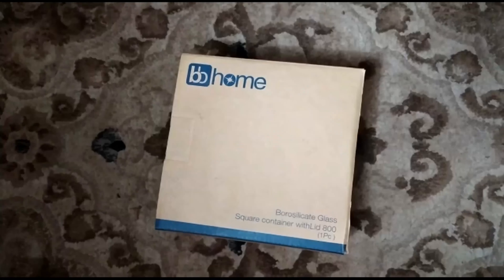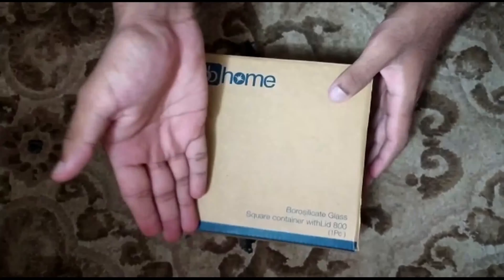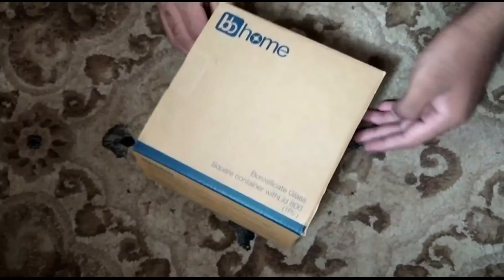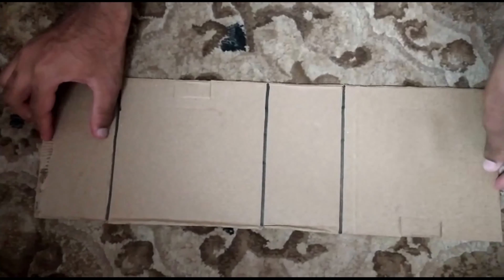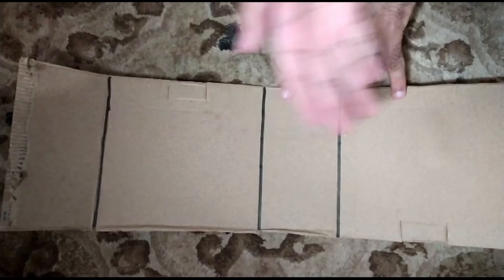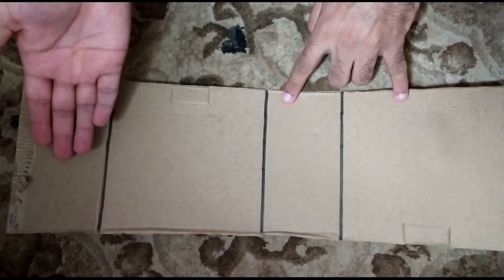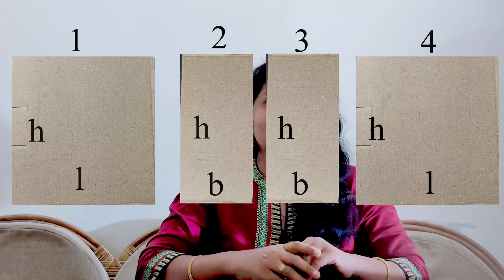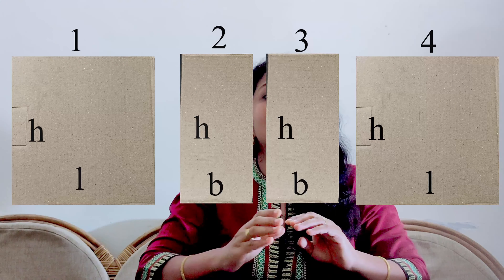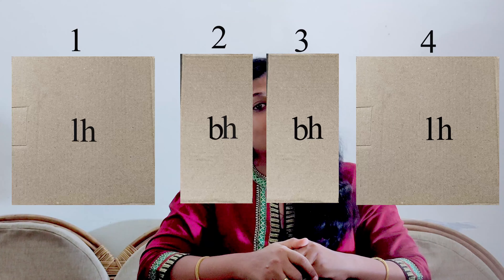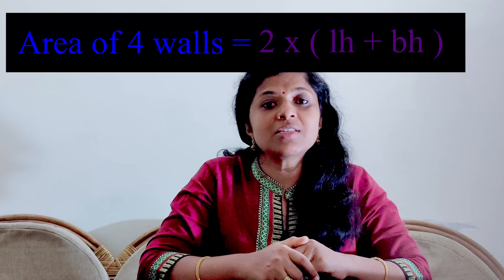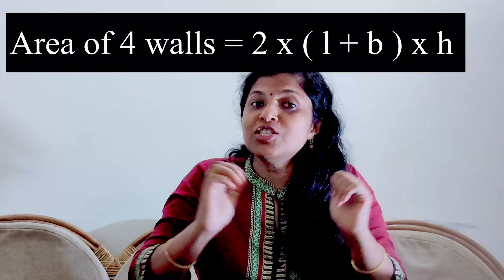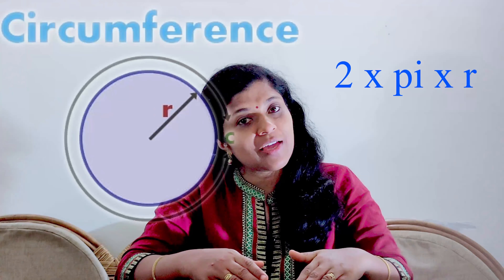Let us try to visualize what the area of four walls means. This is our room — we have a length, breadth, and a height. We open this room and separate each of its four walls. The opened-up room will look like wall one, two, three, four. To find the area of the four walls, we just add all the individual areas. So the area is 2 × (LH + BH). In a simpler way, it is the perimeter of the cross-sectional area multiplied by the height. So the curved surface area of a cylinder is the circumference of the cross-sectional circle multiplied by the height.